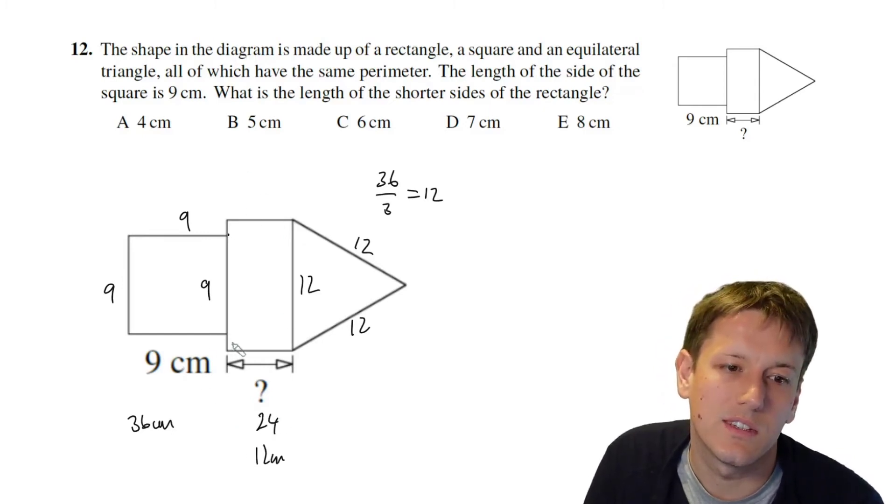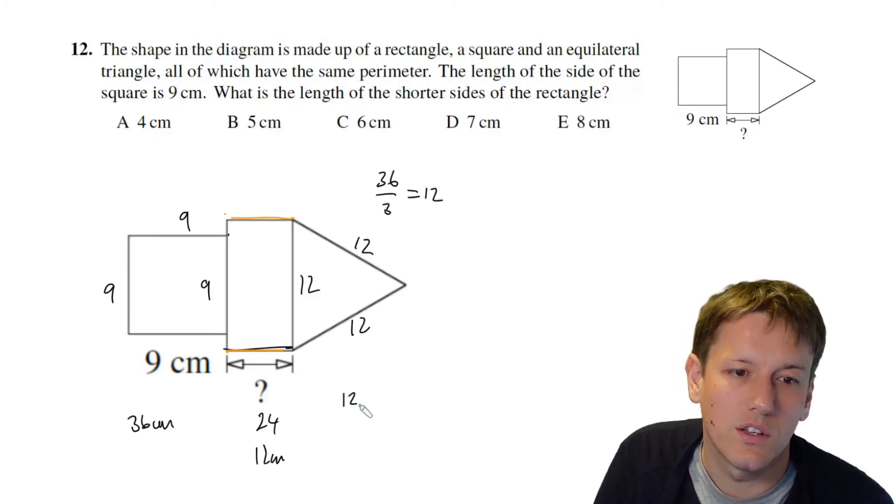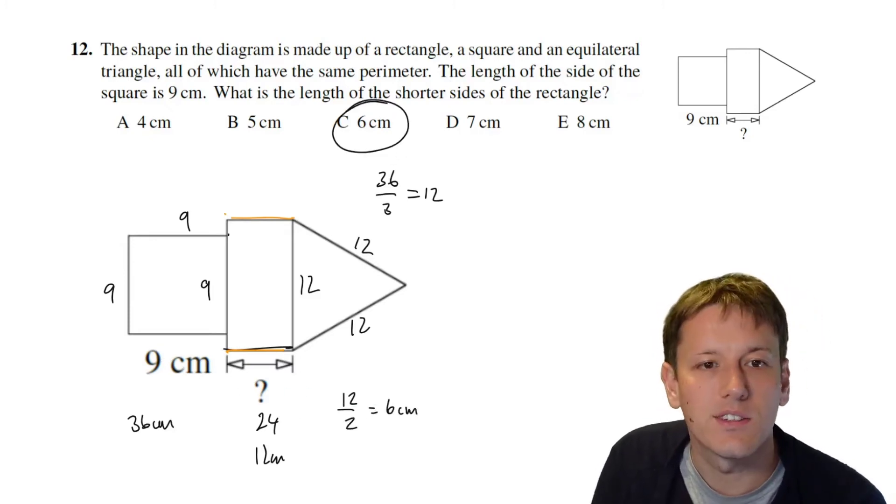Well okay we've got these two sides are both 12 so they add up to 24 and that leaves us with 12 centimeters for the other two sides of the rectangle here and here so I just need to do 12 divided by 2 and that gives me 6 centimeters and so the answer here is C.